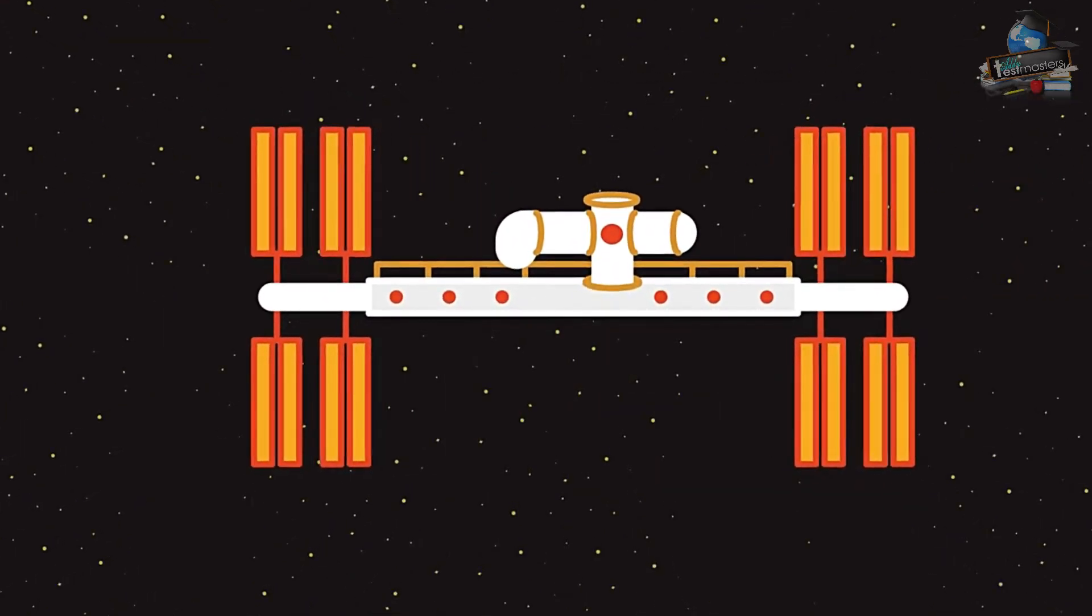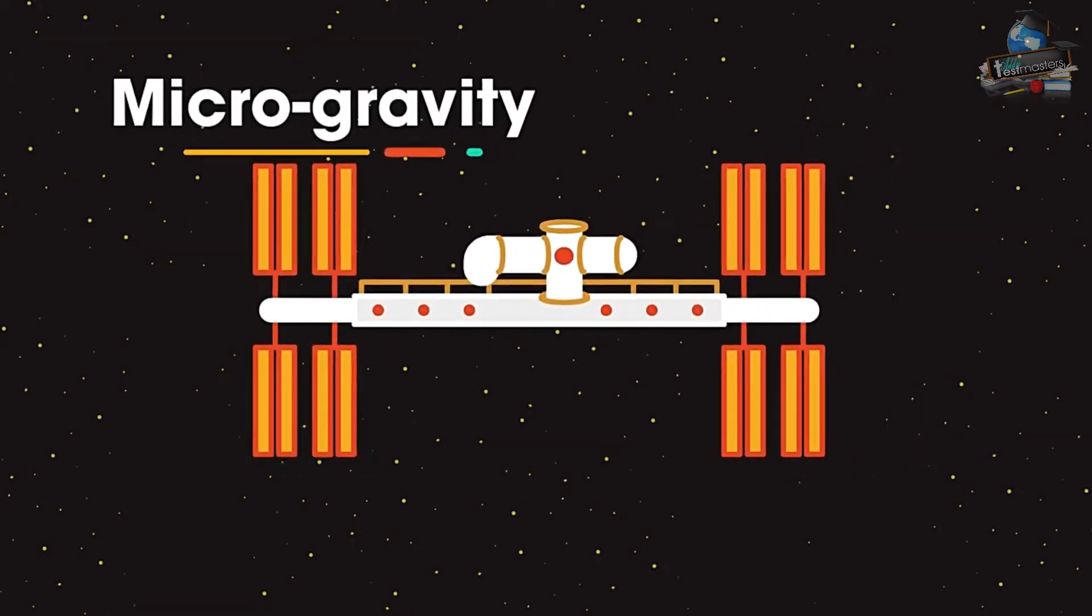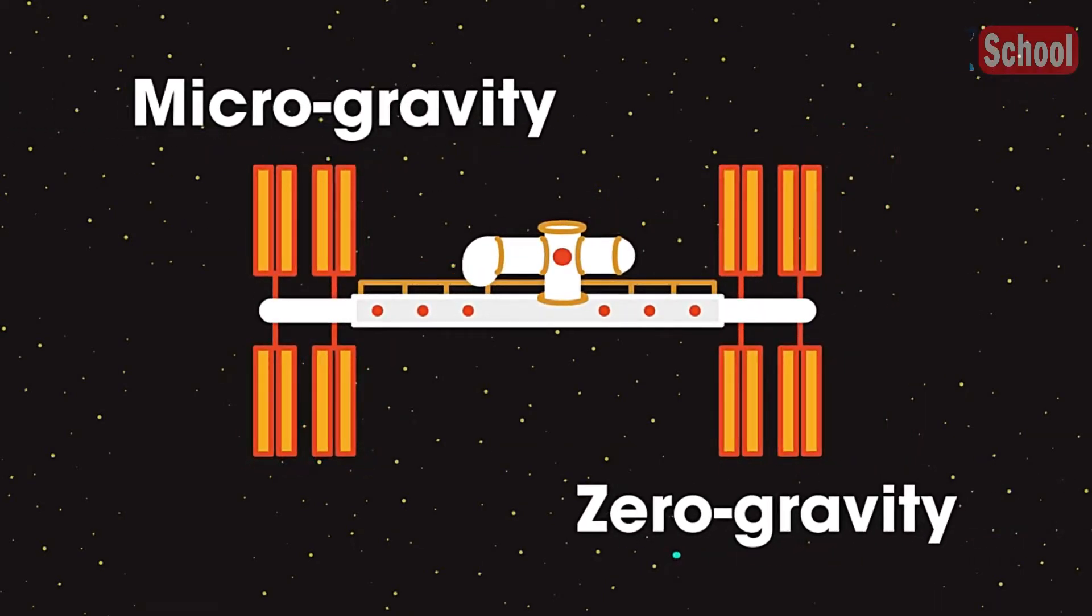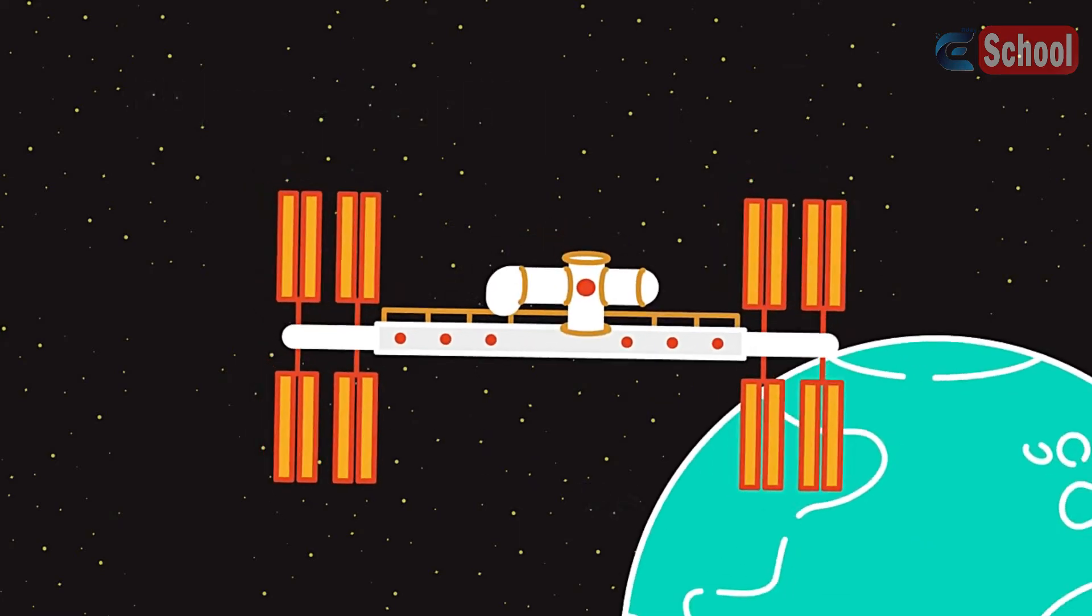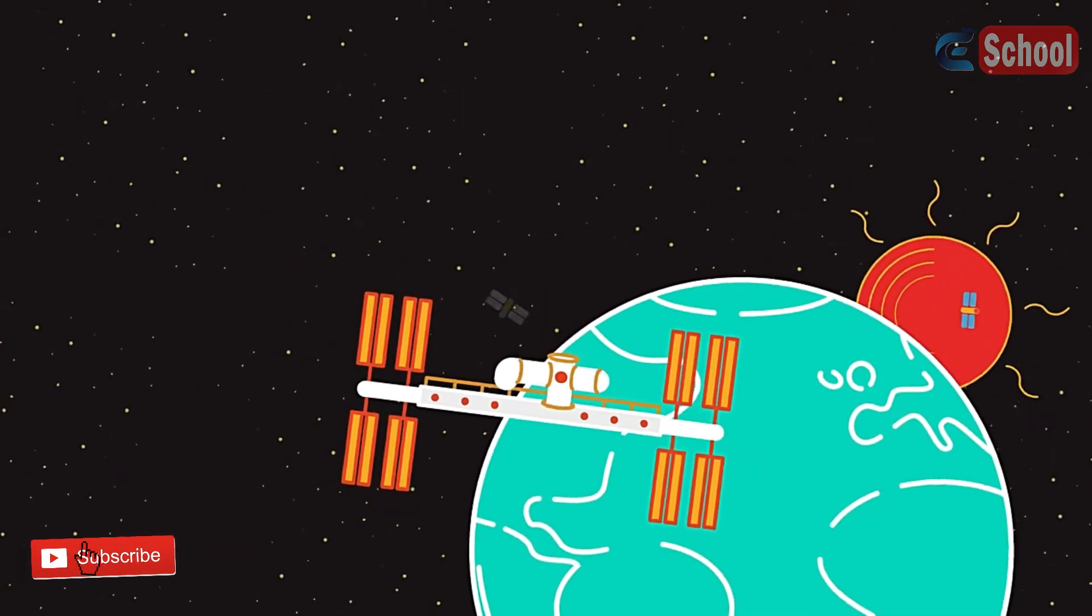People often explain weightlessness in the space station as caused by the lack of gravity and talk of microgravity or zero gravity. But the space station is orbiting the Earth like the Earth orbits the Sun.